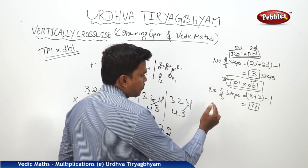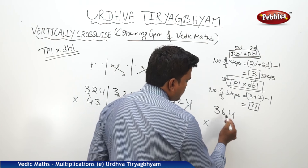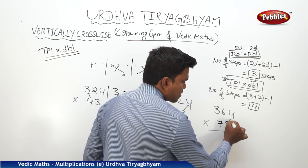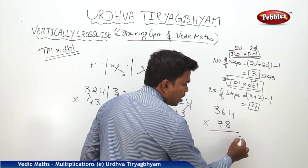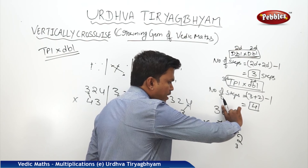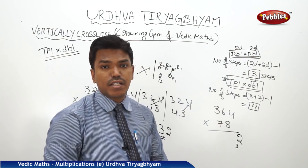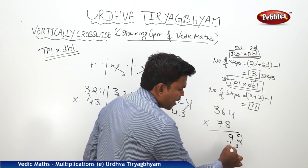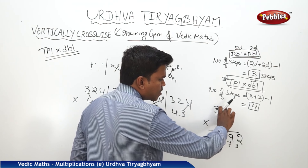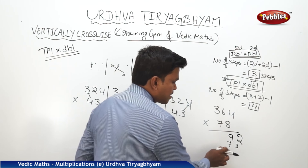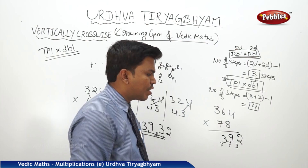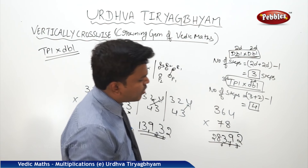One more example: 364 × 78. Step one: 4×8 = 32, drop 2 carry 3. Step two — first to second, second to first: 6×8 = 48, 7×4 = 28; 48 + 28 = 76, plus carry 3 = 79, drop 9 carry 7. Step three — first to third, second to second: 3×8 = 24, 6×7 = 42; 24 + 42 = 66, plus carry 7 = 73, drop 3 carry 7. Step four: 3×7 = 21, plus carry 7 = 28. Answer: 28392.